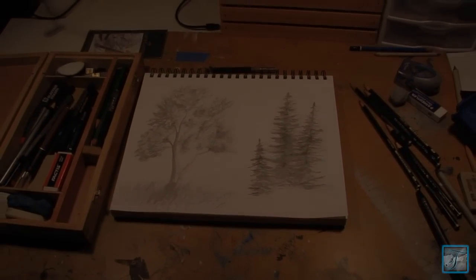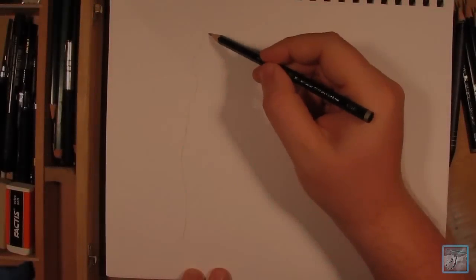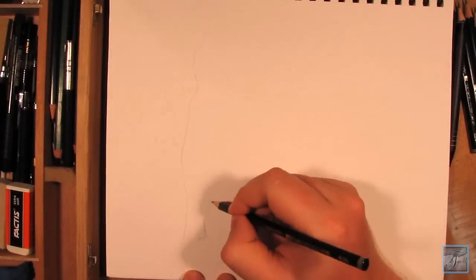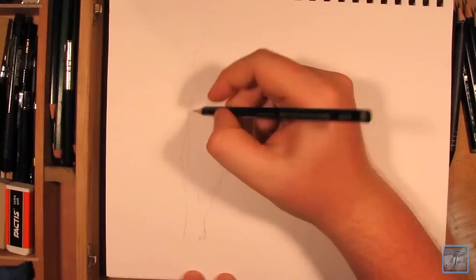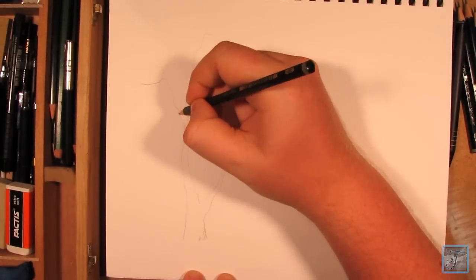What's going on everybody, welcome back to the Art Shack. Today I'll be showing you two trees that I really like to draw. I start off the first one by drawing a long line, making it slightly curved here and there, but at the top I like to really wiggle it out.